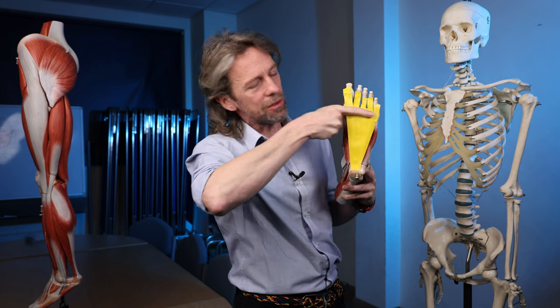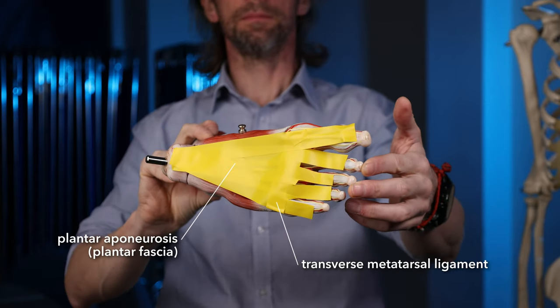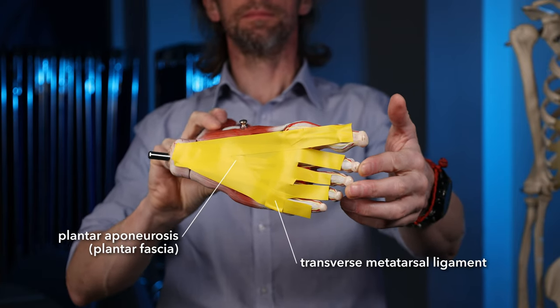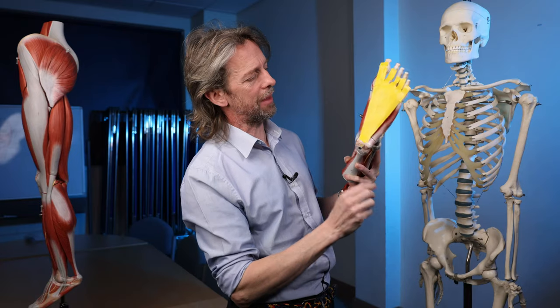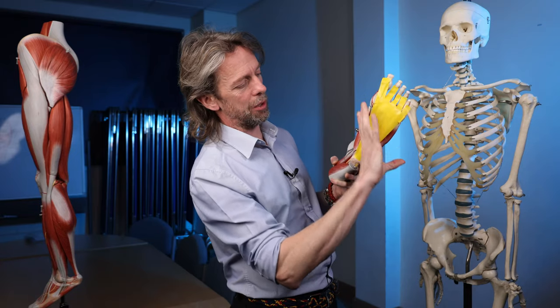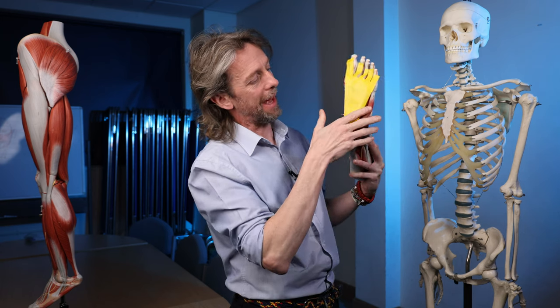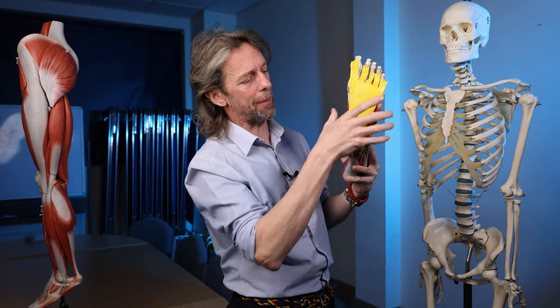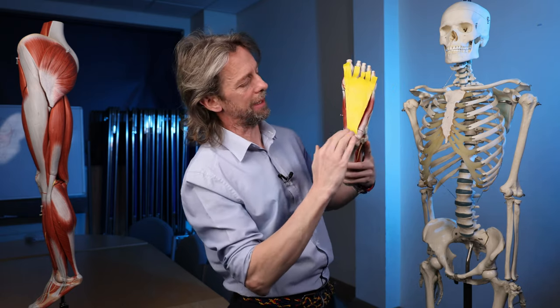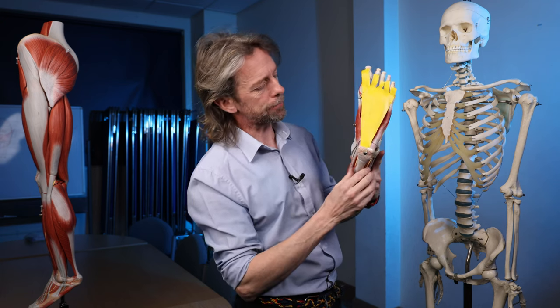There is a transverse metatarsal ligament running across here which it also blends with and ties everything together. It's good to think of the plantar aponeurosis as a structure running like this tying a number of structures together. It also has a medial part which is thinner which runs around to the dorsal fascia and a lateral part which also runs around to the dorsal fascia.